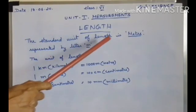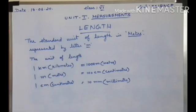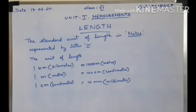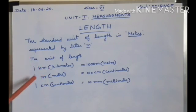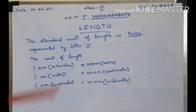The standard unit of length is meter, represented by the small letter m. Meter is the standard unit for measuring length. In a tailor shop, we can see the meter rod. A meter rod is divided into 100 equal parts, and each part is called a centimeter. Smaller measurements are measured in centimeters. The scale we use in our classroom is 15 centimeters long. In short, centimeter is written as cm. So, 1 meter is equal to 100 centimeters. Very small lengths are measured in millimeters; 1 centimeter is equal to 10 millimeters.